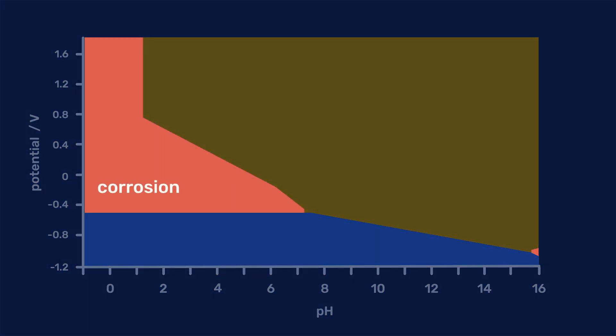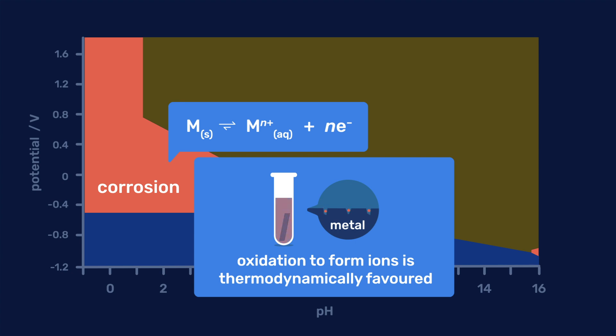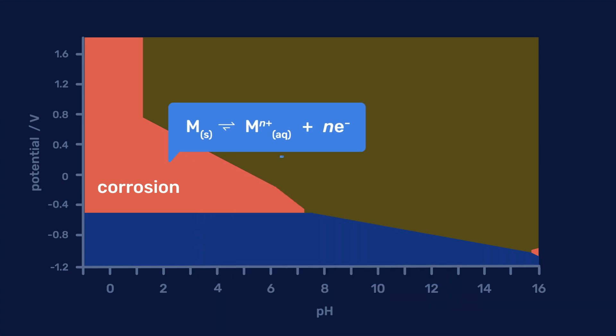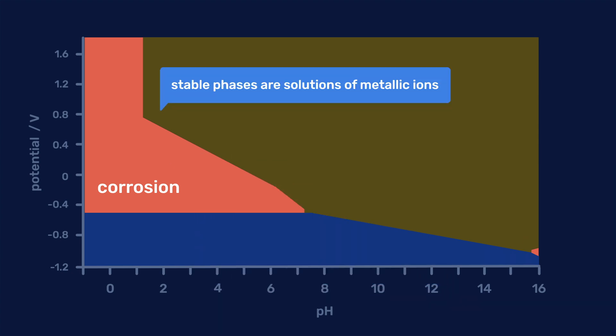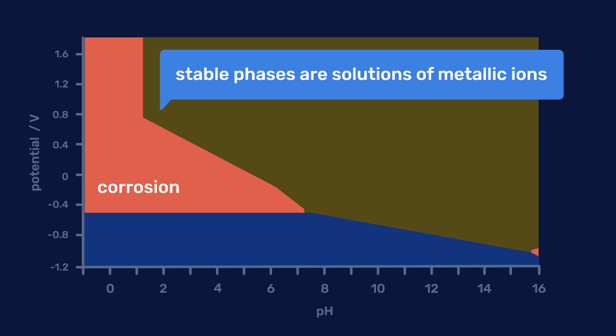The region of corrosion represents conditions under which the oxidation of the metal to a soluble product is thermodynamically favored. Here, the stable phases are solutions of metallic ions. In the case of iron, iron 2 plus or iron 3 plus ions.